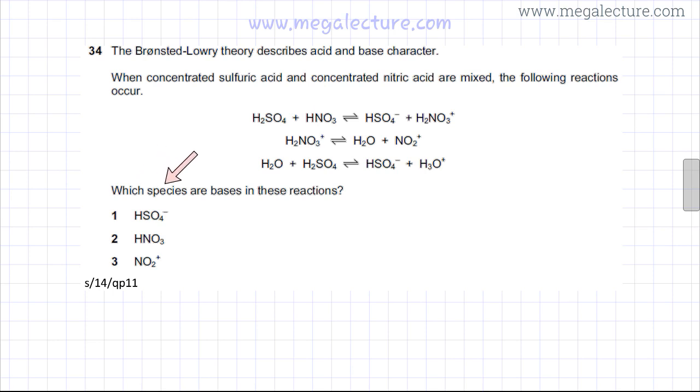The question states which of the species are bases in these reactions. The first species we need to discuss is HSO4-. We need to state what an acid is according to Bronsted-Lowry theory - an acid is a proton donor or it donates an H+ ion, whereas a base accepts H+ ions. Bases are also compounds that have OH- ions which have the ability of accepting H+ ions.